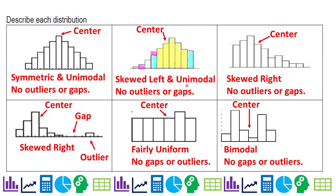Just to review distributions, if it's symmetric and unimodal and no outliers or gaps, your center tends to be in the middle. If it's skewed left, your center will probably be a little bit left. And then skewed right, there's your center.